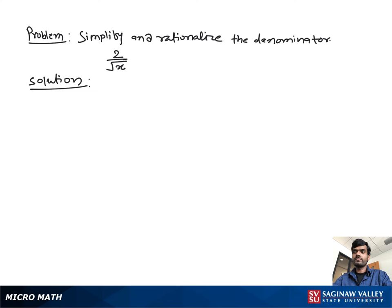Simplify and rationalize the denominator: 2 over square root of x. To make the denominator a rational number, we need to remove the square root from the denominator.